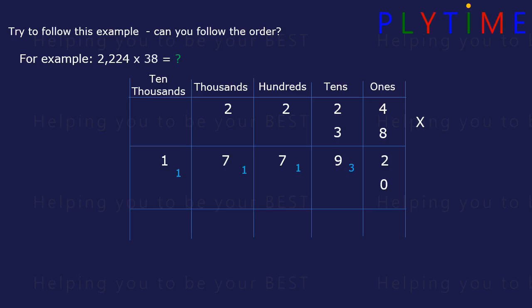And then we move into multiplying by 30. We add our 0. Then 3 times 4. Then 3 times 2. Don't forget the carried over one. 3 times 2 again. And 3 times 2 again. Then we add up.